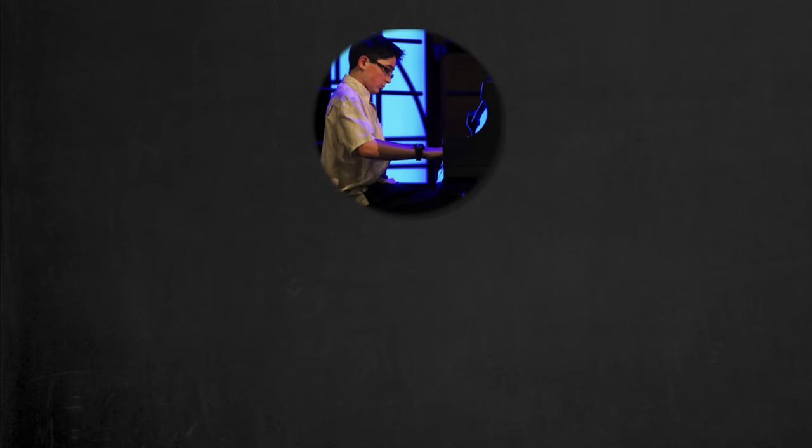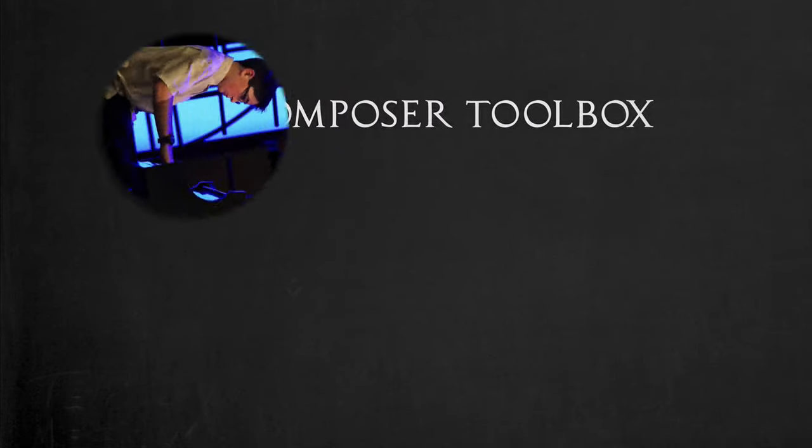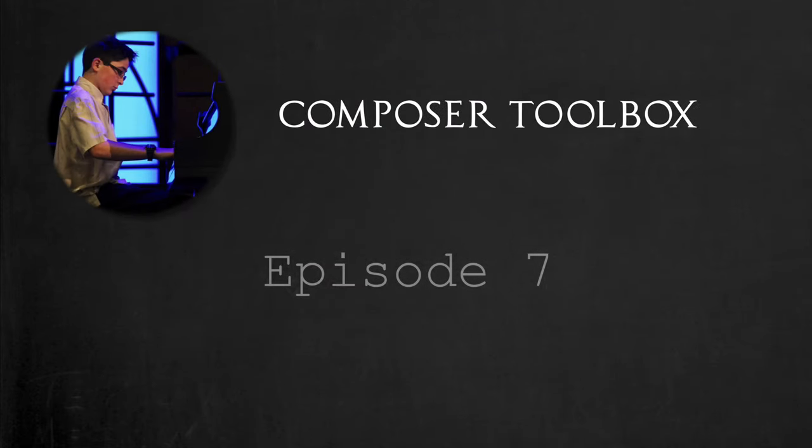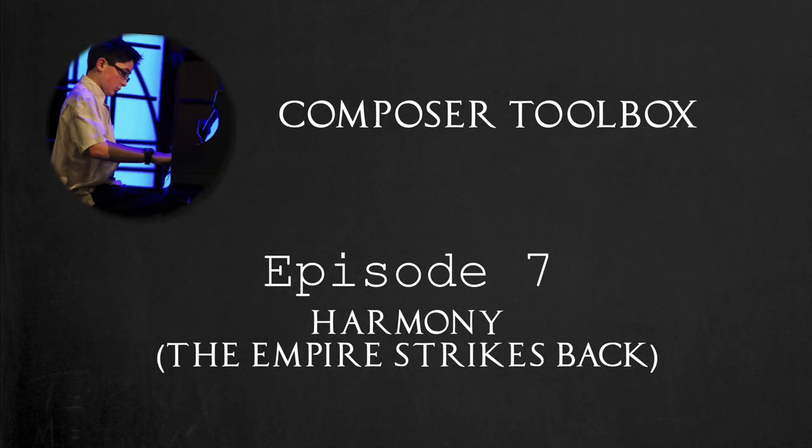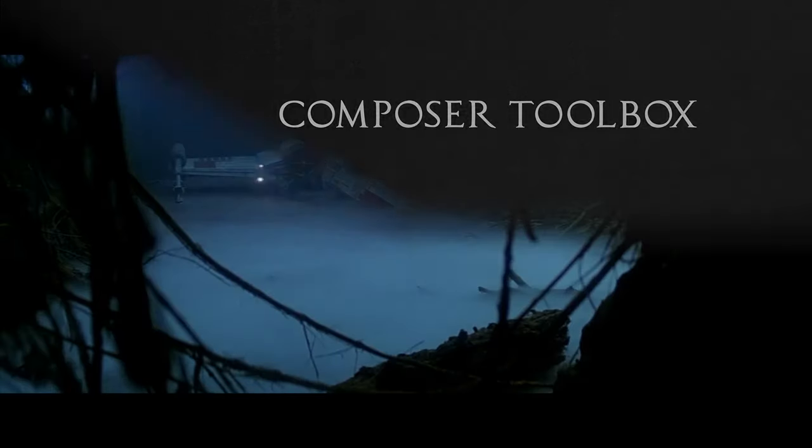Hello and welcome to Composer Toolbox, the show that takes an in-depth look at the common techniques utilized by the master composers and how you can practically apply them. In this episode, we're going to be taking a look at how John Williams uses harmony and harmonic concepts in The Empire Strikes Back.